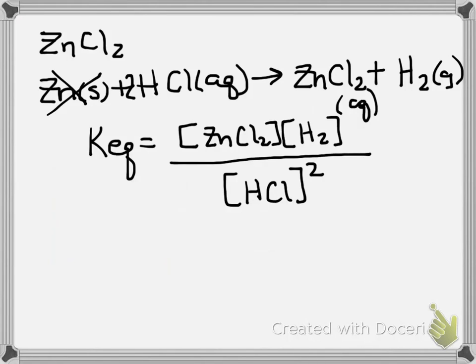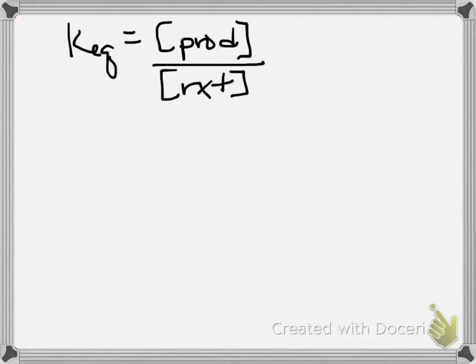So again, products over reactants. Let's look at what would happen with values if you are presented with a value. What does that mean as far as the shift of the reaction? So because these are fractions, remember at the very beginning we said that these are simply products over reactants. So this is nothing more than a fraction. So if this fraction is greater than 1, for example 3 over 2, that means we have more product than reactant. So that means the reaction has shifted to the product side.